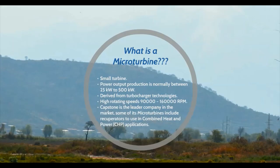In this section we are going to talk about microturbines. A microturbine is a small turbine with a power output between 25 to 500 kW. Microturbines were derived from turbocharger technologies found in large trucks or the turbines in aircraft auxiliary power units. Most microturbines are single-stage radial flow devices with high rotating speeds of 90,000 to 160,000 revolutions per minute. However, a few manufacturers have developed alternative systems with multiple stages or lower rotation speeds.